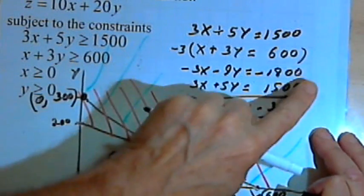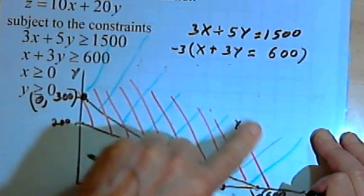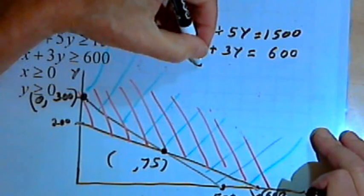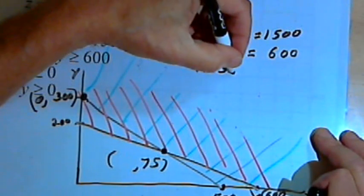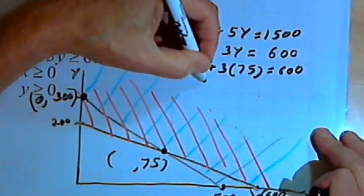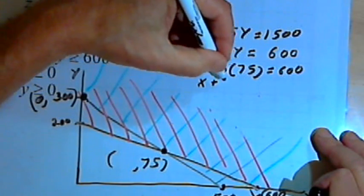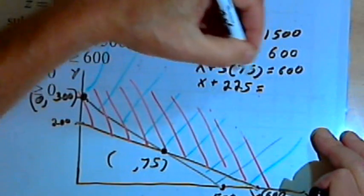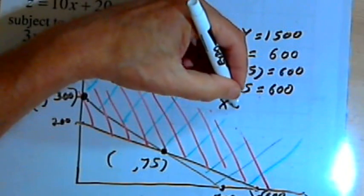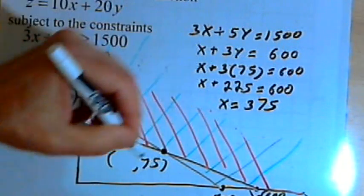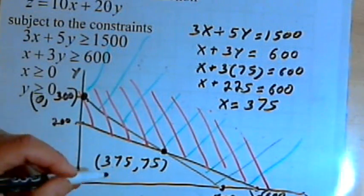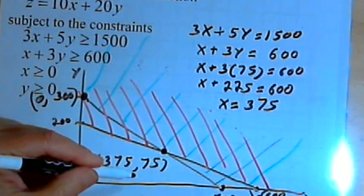Let's put that in here. Now let's go back and plug that 75 in for the y in one of these equations. I'll use the second equation. I'm going to have x plus 3 times 75 equals 600. 3 times 75 is 225. So x plus 225 equals 600. I'll subtract 225 from both sides, and I get x equals 375. So my third corner point is 375,75.